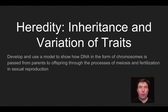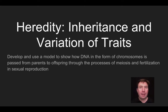Hey everyone, it's Mr. Matthew here for our heredity video number one, in which we're going to talk about inheritance and variation of traits. We're going to specifically focus on what the model of DNA is, how that model of DNA is related to chromosomes, how chromosomes get divided in the formation of gametes through meiosis, and then how gametes will fuse to lead to the formation of a zygote and the next generation in sexual reproduction.